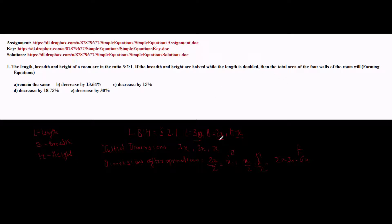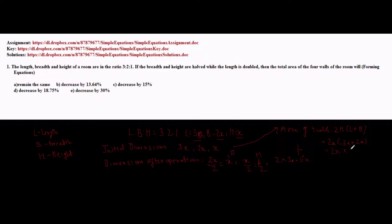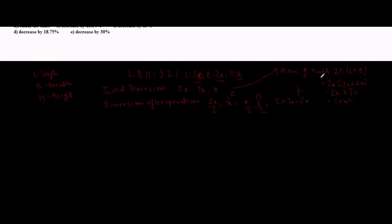Now we have to see what happens to the area of 4 walls in both cases. The formula for area of 4 walls is 2H(L + B). With the initial dimensions, that is 2 × x × (3x + 2x) = 2x × 5x = 10x². So the initial area of 4 walls was 10x².